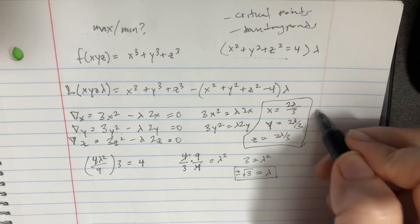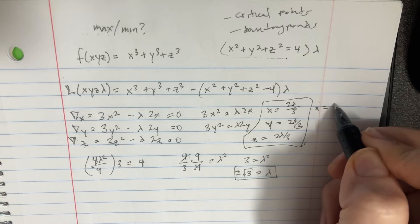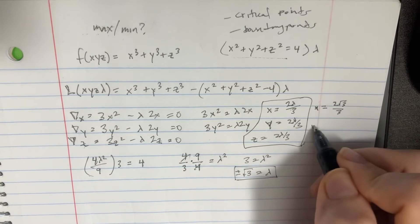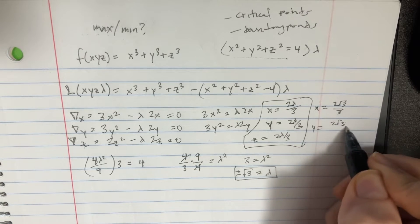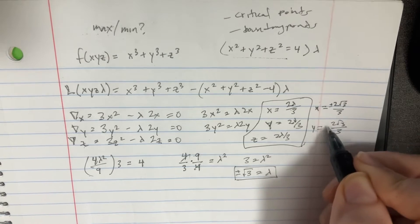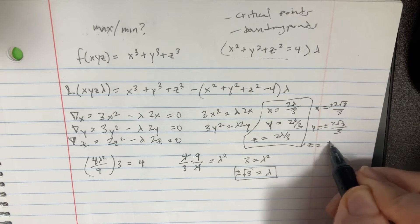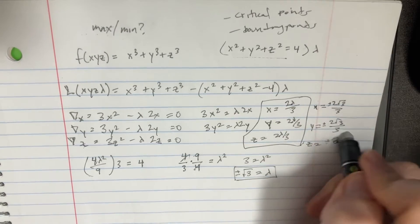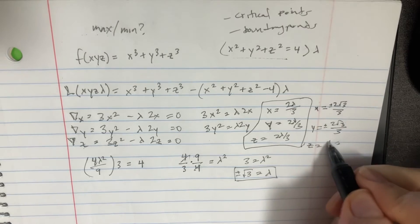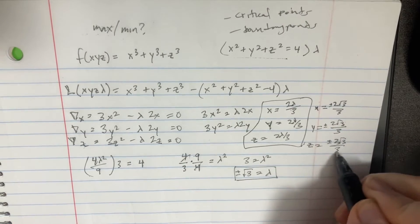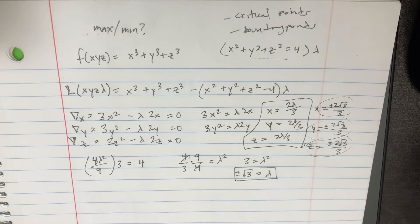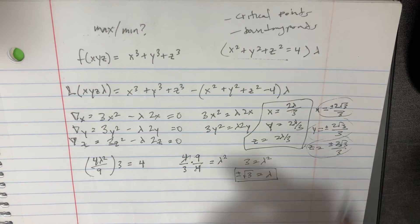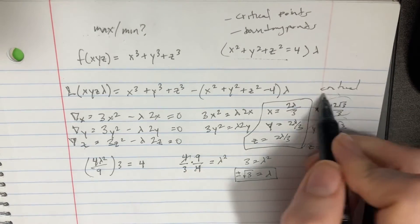With λ = ±√3, plugging back in gives x = 2√3/3, y = 2√3/3, and z = 2√3/3 — all plus or minus. So the critical points are (±2√3/3, ±2√3/3, ±2√3/3). But these are just critical points; we still need the boundary points.